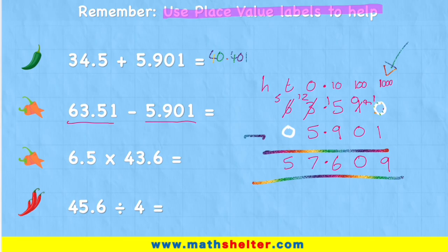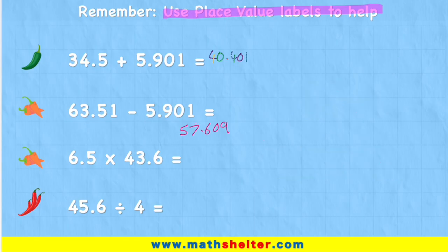So my answer to 63.51 subtract 5.901 is 57.609 or 57 and 609 thousandths. Next question.